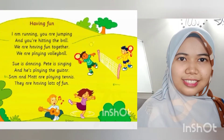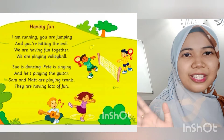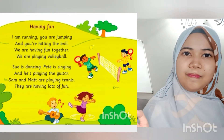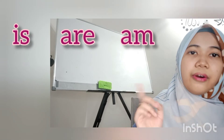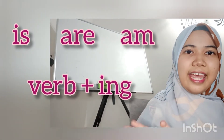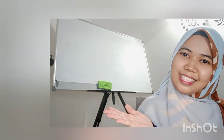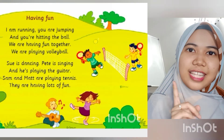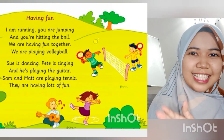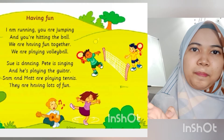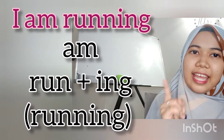Okay, let's try. For example, in the song just now 'Having Fun,' we can see lots of verbs used there — the present continuous tense: are, is, am, and the -ing form. Remember: when there is is, are, or am in front of the verb, we need to add -ing at the end of the verb. Let's discuss the example from the song — the first sentence: 'I am running, you are jumping.' We can see the verb there: 'I am running.' We need to put -ing after the verb.